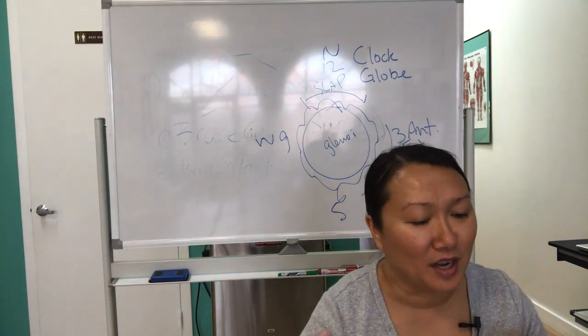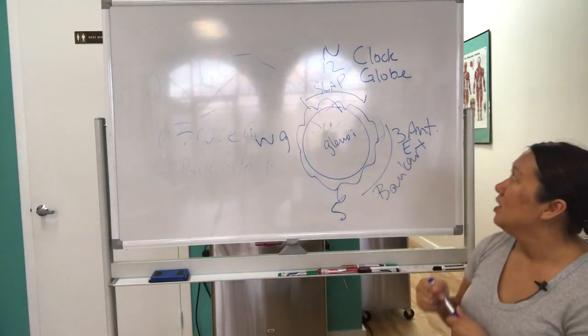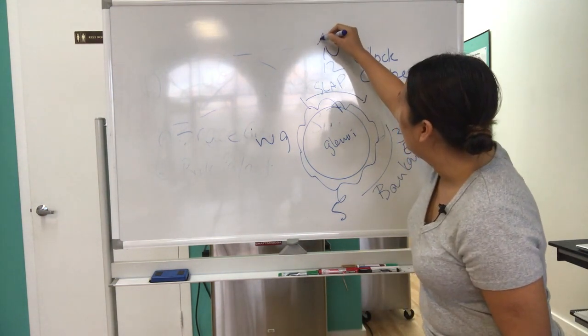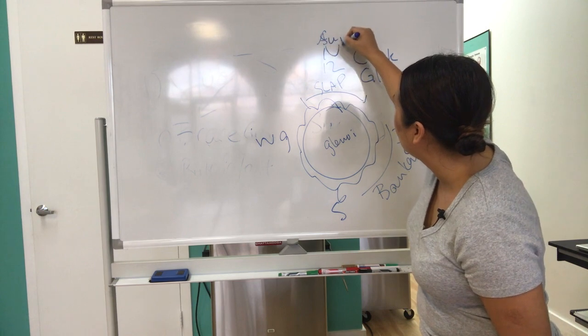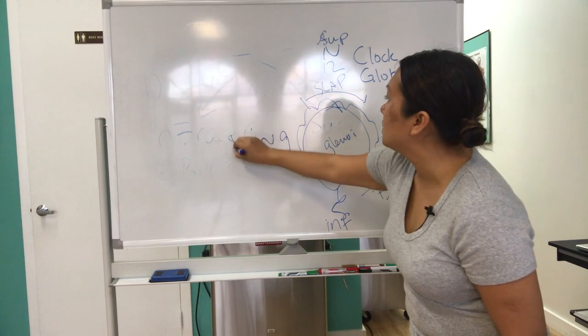You've got to look at the similarities about it. So this is superior, this is inferior, this is anterior, this is posterior.